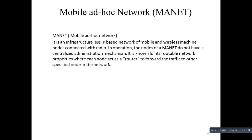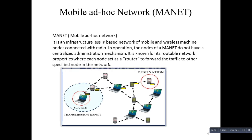In operation, the nodes of the MANET do not have centralized administration mechanisms. It is known for its routable network properties where each node acts as a router to forward the traffic to another specified node in the network. As we can see in the given diagram, this is the source which wants to communicate with the destination. These are the intermediate nodes that transmit the data from source to destination. This system does not have any centralized mechanism.